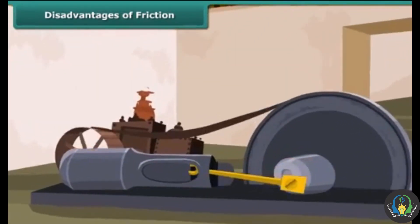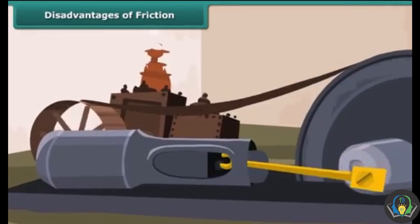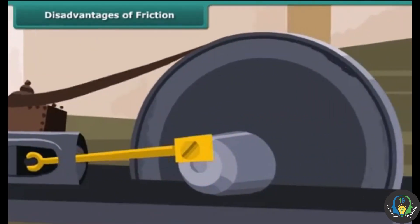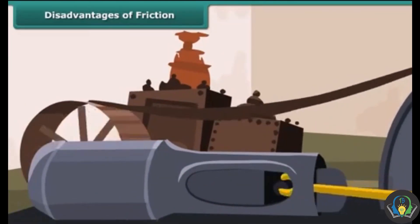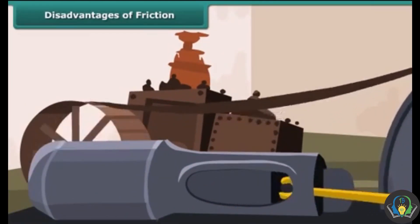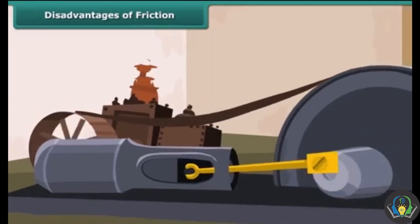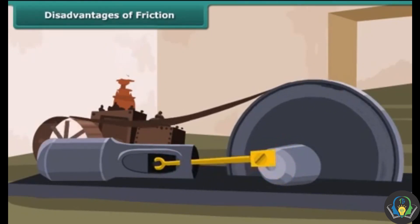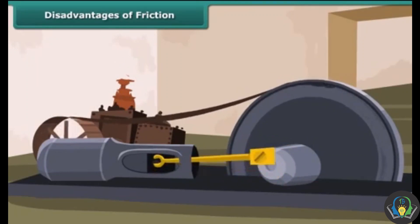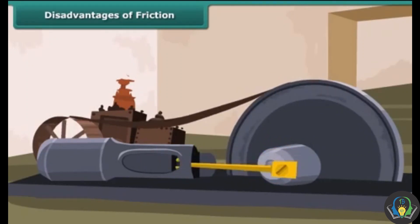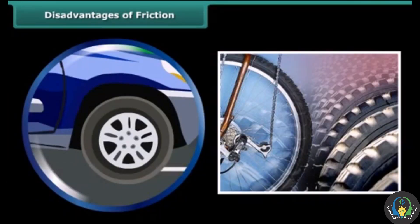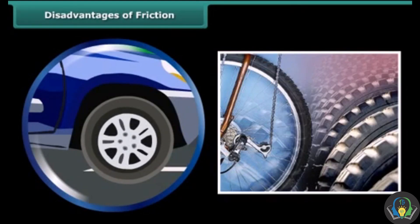Friction reduces the efficiency of machines. Some of the force applied to run a machine is lost in overcoming friction between its moving parts. When the moving parts of a machine work together, a lot of heat is produced due to friction, which damages the machine. Due to friction, the rubbing parts of a machine wear out gradually, and the tires of a vehicle also wear and tear due to friction.